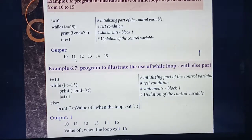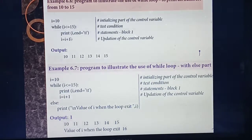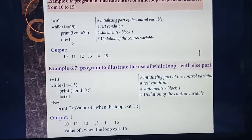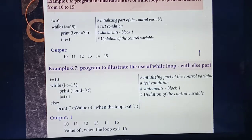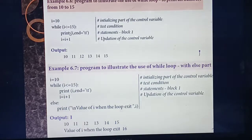`i = i + 1` means: first time condition is true, print 10; then increment to 11; second iteration prints 11, increment to 12, and so on. Starting value is `i = 10`, condition is `while i <= 15`, so the program will print numbers from 10 to 15.